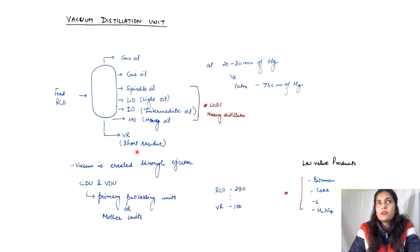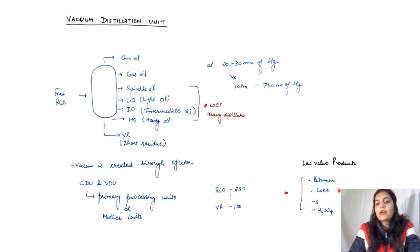So from the vacuum distillation unit we get heavy distillates and low value products. Heavy distillates include spindle oil, light oil, intermediate oil, and heavy oil — these are used as LOBS or lube oil base stock.